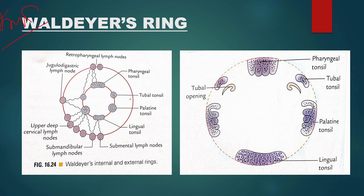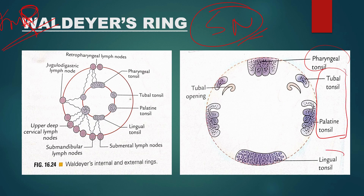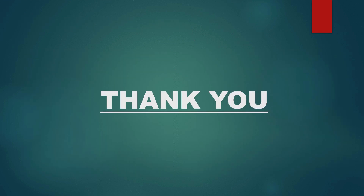Lastly, we have Waldeyer's ring, which can also appear as a short note. Waldeyer's ring is an aggregation of lymphoid tissue underneath the epithelial lining of the pharyngeal wall — called tonsils — which surround the commencement of the air and food passages. The ring is formed by the pharyngeal tonsil posteriorly, the tubal and palatine tonsils laterally, and the lingual tonsil anteriorly. Draw the two diagrams for this answer. That's it for today — in part three we will discuss important topics from embryology. Keep learning and keep supporting the channel. Thank you.